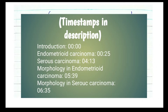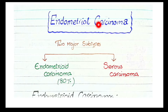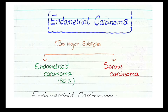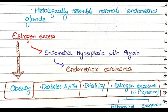In this lecture we will discuss the pathology of endometrial carcinoma. We have already discussed endometrial hyperplasia in detail and now we will discuss endometrial carcinoma. There are two major subtypes: endometrioid carcinoma and serous carcinoma. The most common is endometrioid carcinoma, which accounts for about 80% of cases.